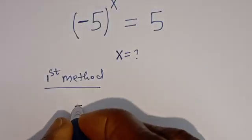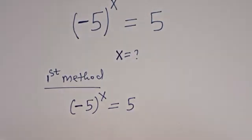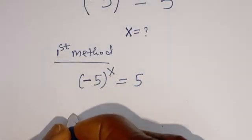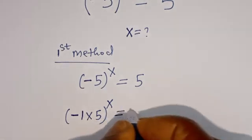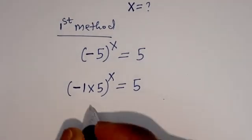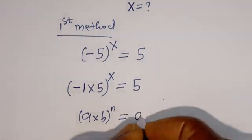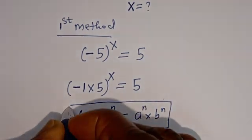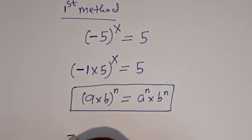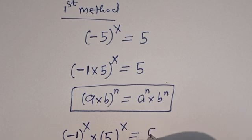From the first method, we have minus 5 to the power of s is equal to 5. Now, this minus 5 to the power of s can be written as minus 1 multiplied by 5, all to the power of s, is equal to 5. Take note that if you have a multiplied by b to the power of n, this is equal to a to the power of n multiplied by b to the power of n. Then, this can be written as minus 1 to the power of s multiplied by 5 to the power of s is equal to 5.